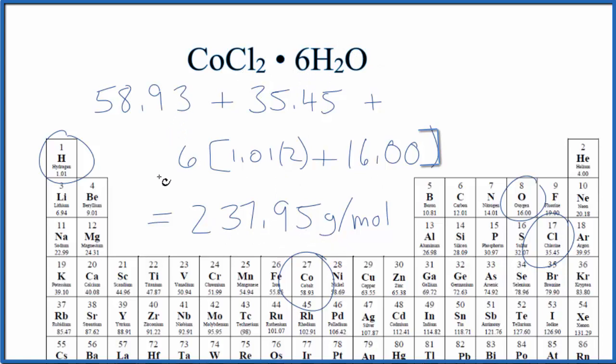Note that my periodic table goes out to two decimal places. If your periodic table is different, you might end up with a slightly different answer here for our molar mass of cobalt chloride hexahydrate.